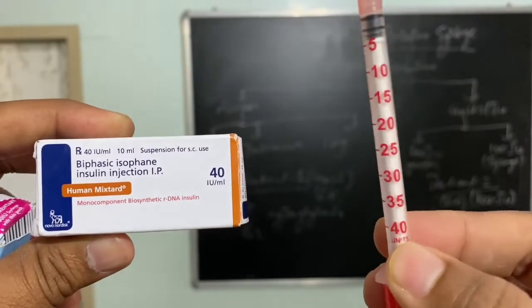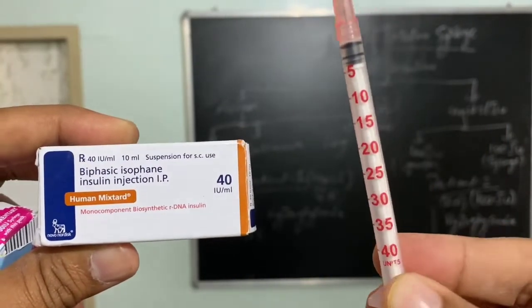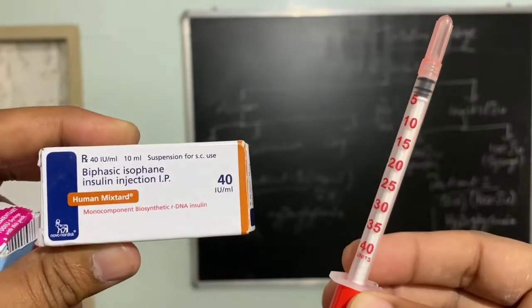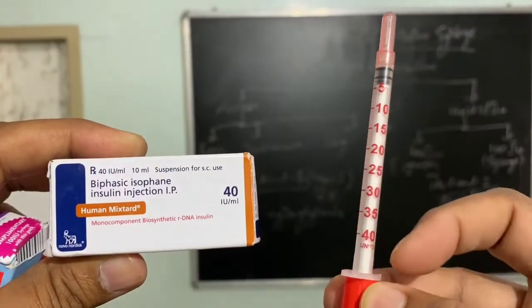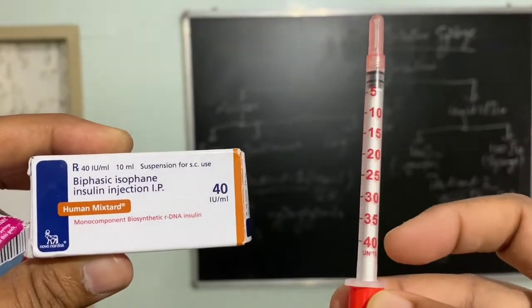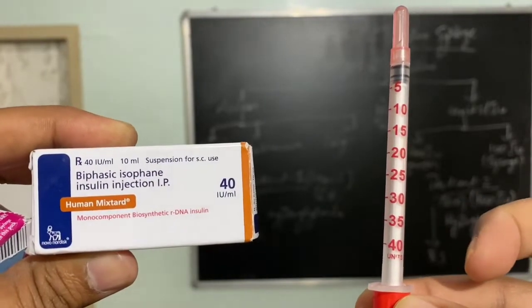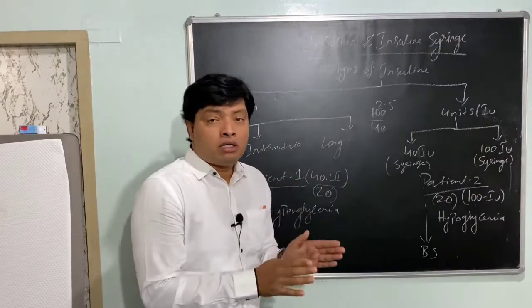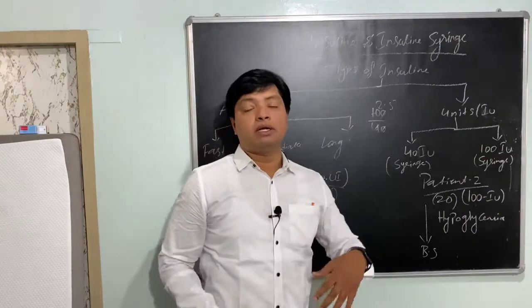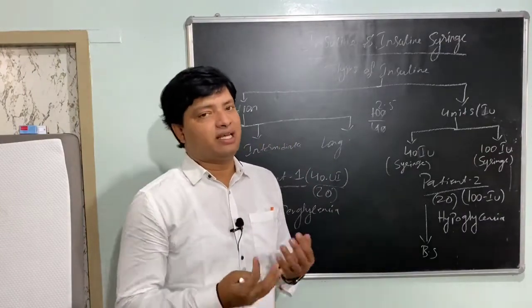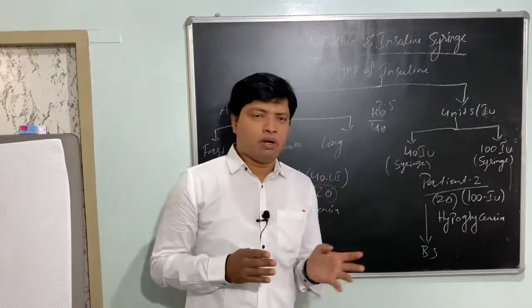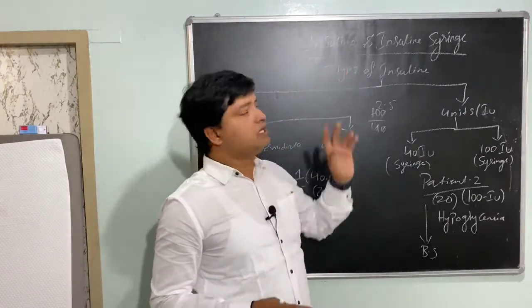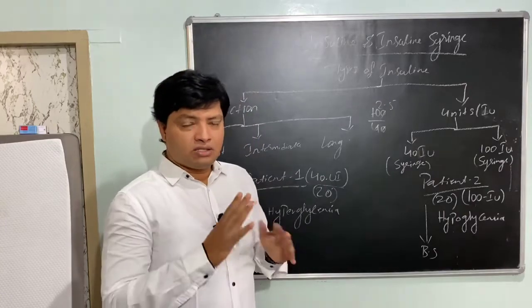This is a 40-unit insulin syringe — it is in red color. Today we are going to learn about an important topic related to diabetic patients who are taking insulin. It's about insulin and their syringes.